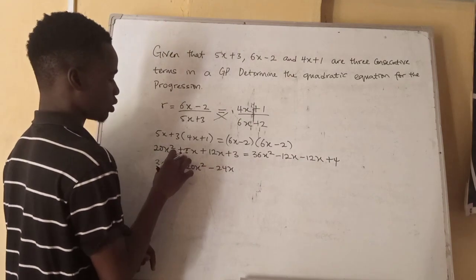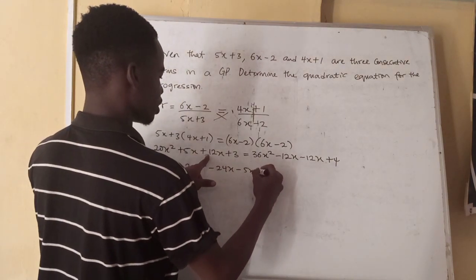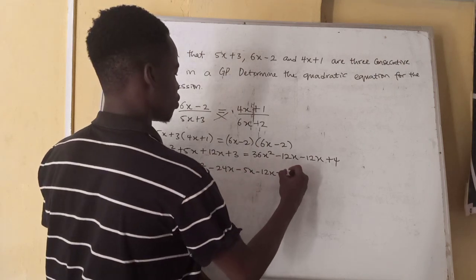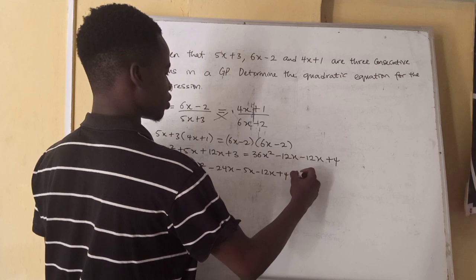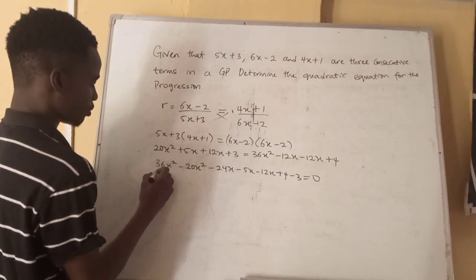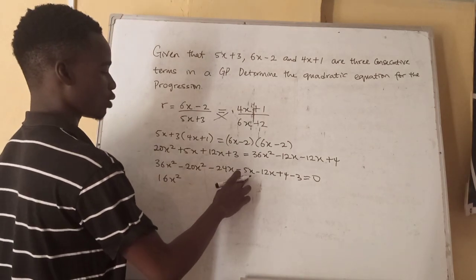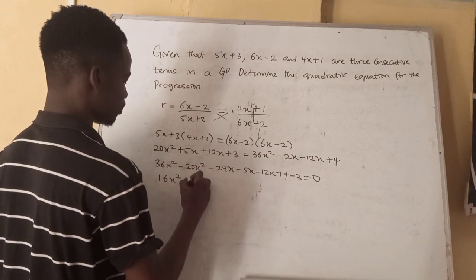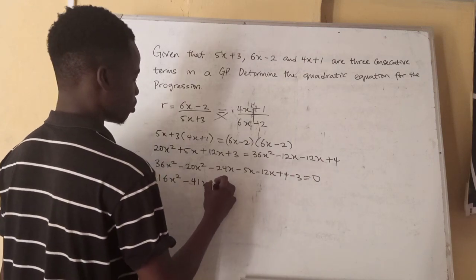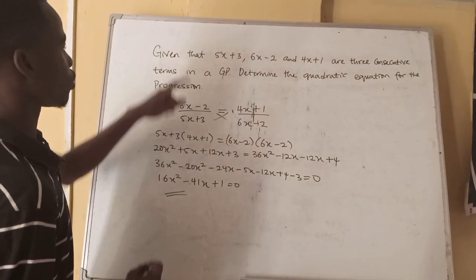Rearranging everything to one side and setting equal to zero, we have 36x squared minus 20x squared which is 16x squared, then minus 24x minus 17x giving minus 41x, then 4 minus 3 giving plus 1. So the quadratic equation for the progression is 16x squared minus 41x plus 1 equals 0.